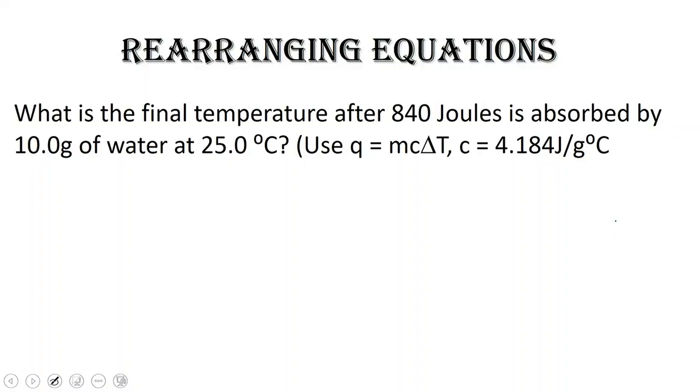We're going to use this equation: Q is equal to MC delta T, where C is 4.184. What do each of these mean?